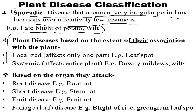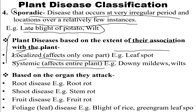Next, plant diseases can be classified based on the extent of their association with plants, which can be localized or systemic. Localized disease affects only a single part of a plant — for example, leaf spot — whereas systemic disease affects the entire plant, such as downy mildew or wilts.